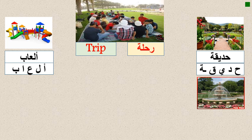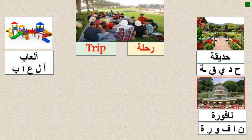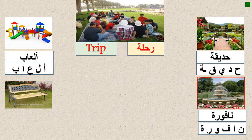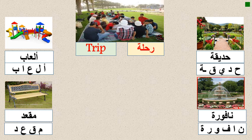Next picture - نافورة, meaning 'fountain.' It has many letters: nun, alif, fa, waw, ra, ta marboota - نافورة. And مقعد, meaning 'seat,' 'chair,' or 'bench.'